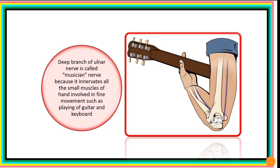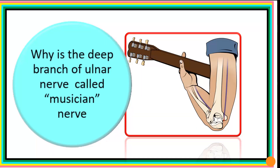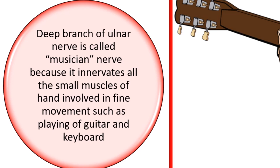With our knowledge based on the motor distribution of the deep branch of the ulnar nerve, we can now provide a solution to the question from Part 1: why is the deep branch of the ulnar nerve called the musician nerve? It is called the musician nerve because it innervates all the small muscles of the hand involved in fine movements — those movements that bring that wonderful note from the guitar and the keyboard. The nerve supplying those small muscles is the deep branch of the ulnar nerve.